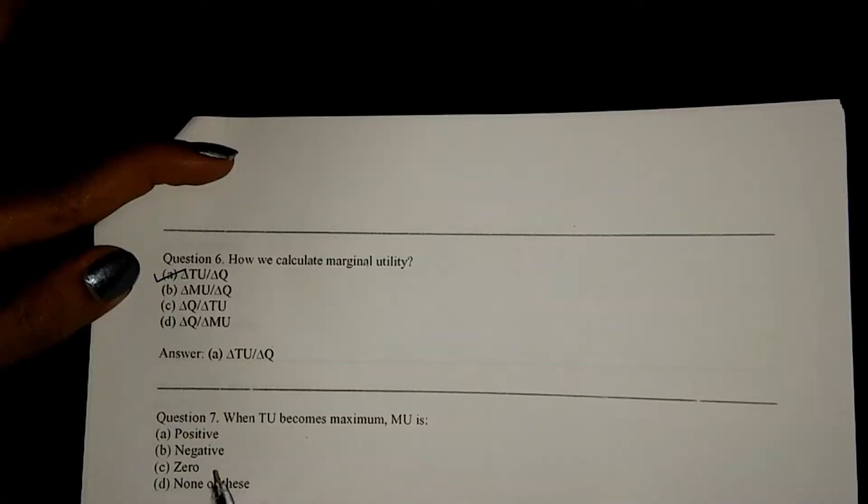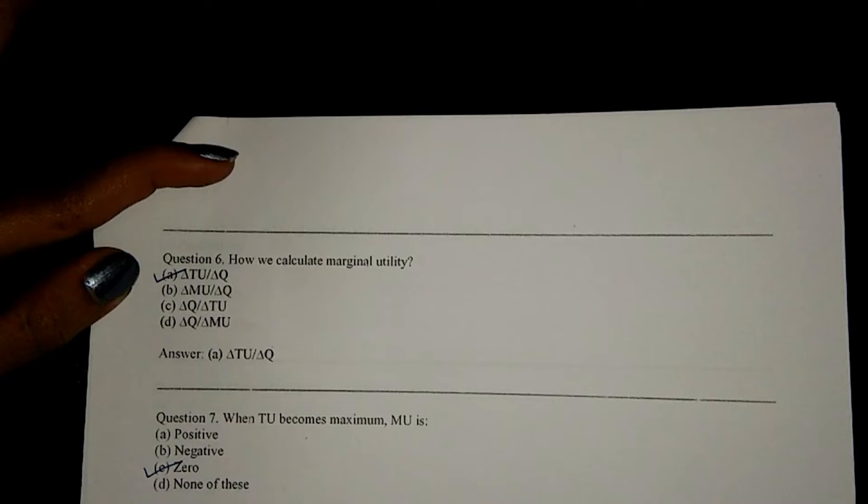Next, when TU becomes maximum, MU is zero. That's option C.